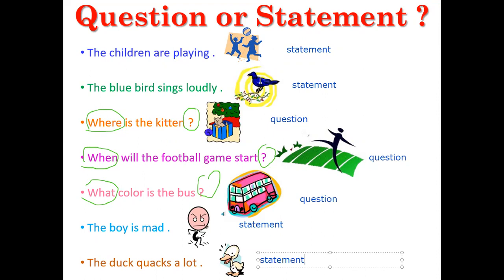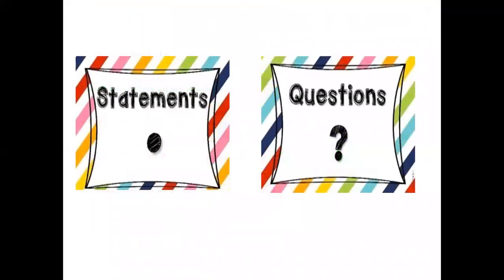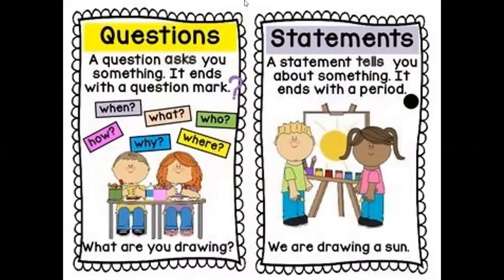So we finished. Don't forget: statements are telling sentences — they tell us things and they end with a period. Questions are asking sentences — they ask us something and we can answer them. They end with a question mark and they begin with question words. So again, the question asks you something, ends with a question mark, and begins with a question word — like, what are you doing? The statement tells you about something and ends with a period — like, we are doing a lesson.